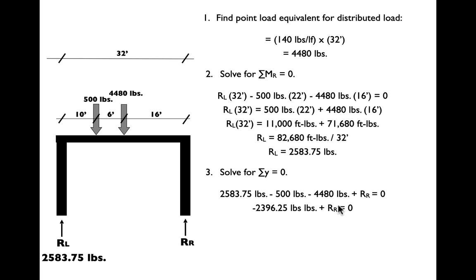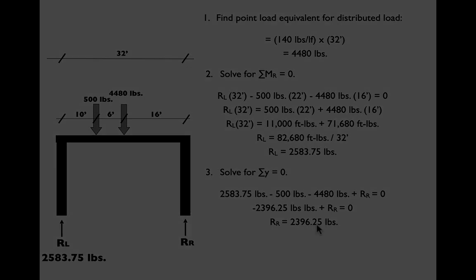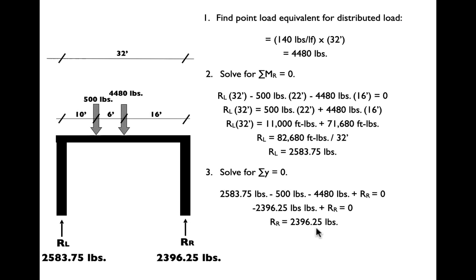If we move that over to the other side, we get that RR equals 2396.25 pounds. So we now have the pier in rotational equilibrium around right reaction. We have the pier in translational equilibrium in the y direction. We don't have any forces working in the x direction, so we know it's in equilibrium there already. We could go back and check. We could run the equations to see if the sum of the moments around left are all balanced out. We'll assume that they will. This is a pier that is now in equilibrium.